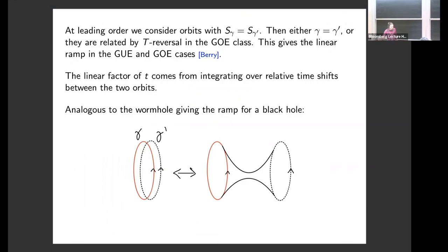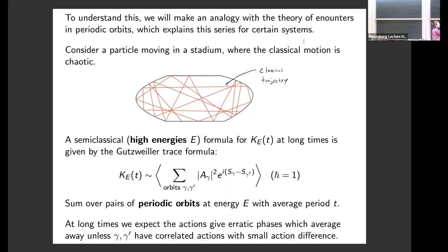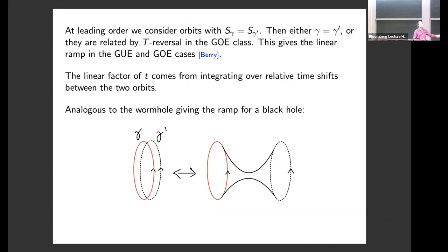At leading order, the simplest thing is to consider orbit pairs where the actions are the same — pairs that are identical or related by time reversal. This set of orbit pairs gives the linear ramp in the spectral form factor: the actions cancel so there's no phase, and the number of such orbits gives you the linear ramp. We can roughly think of the linear growth factor of t as coming from orbits that differ just by a relative time shift — a close analogy to the wormhole computation where the linear growth also came from integrating over relative time shifts.